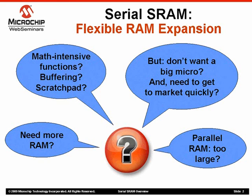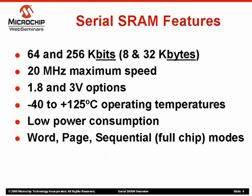Now, let's look at our agenda. If you usually think in terms of kbytes, this works out to 8 and 32 kbytes respectively. To give you a sense of scale, compare these densities to a typical 8-bit microcontroller that has a maximum of 4 to 8 kbytes of onboard RAM. You can dramatically increase the amount of RAM by using Serial SRAM. The devices operate at bus speeds up to 20 MHz, making for very fast data transfer.